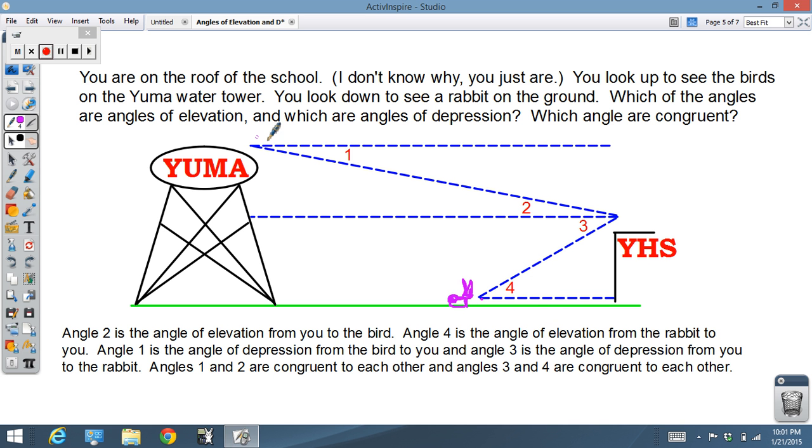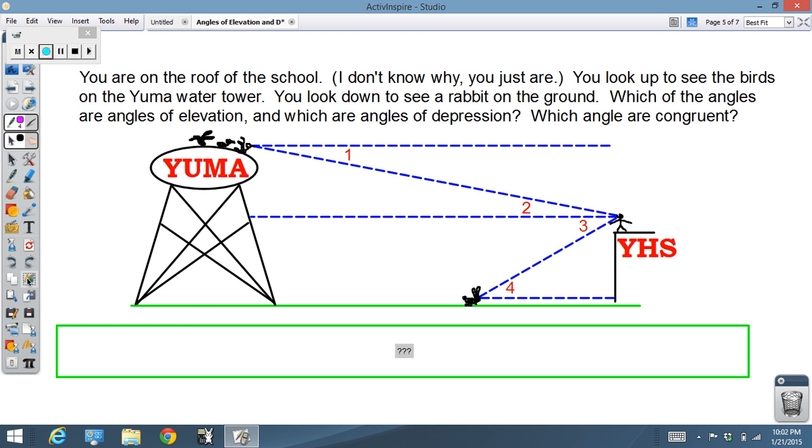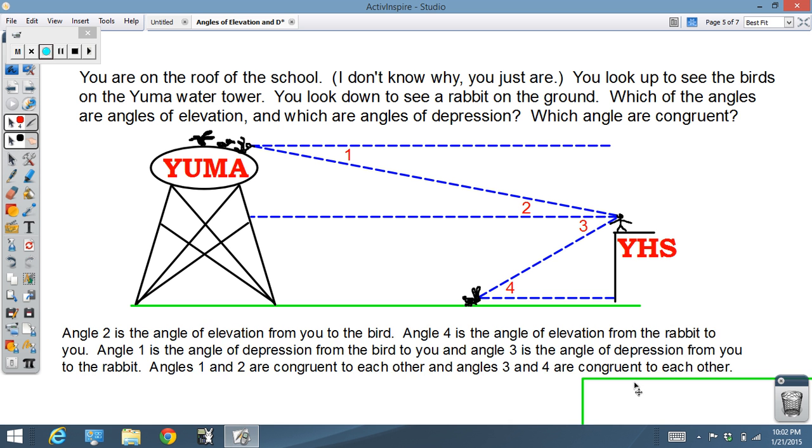Angles 1 and 3 are angles of depression. Angle 1 is an angle of depression from the birds. Angles 1 and 3 are angles of depression. Angles 2 and 4 are angles of elevation. The ones that are congruent: 1 is congruent to 2, and 3 would be congruent to 4. 1 and 2 would have to be congruent, 3 and 4 would have to be congruent. Fair enough, let's move on.